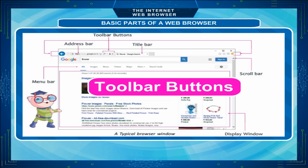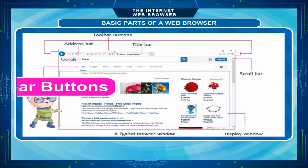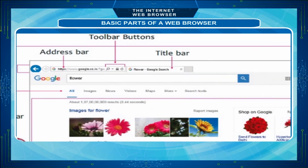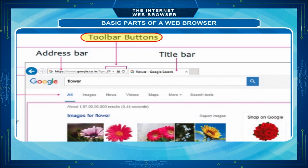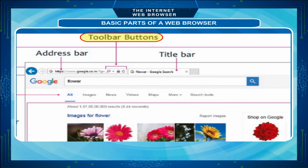Toolbar Buttons: The toolbar is at the top of your browser window, right underneath the title bar. This is where you can see the back button, the home button, the refresh button, etc.